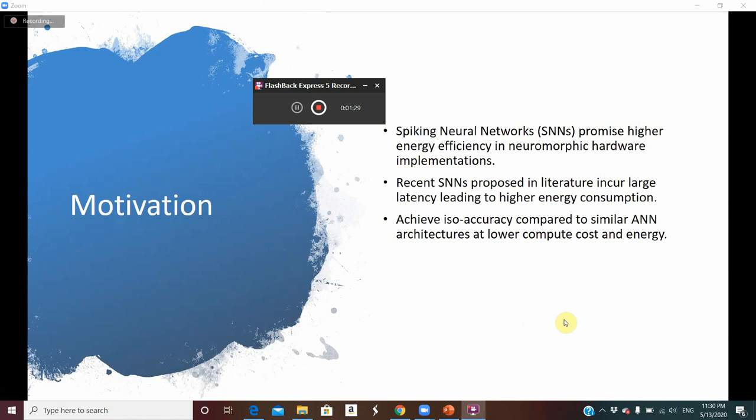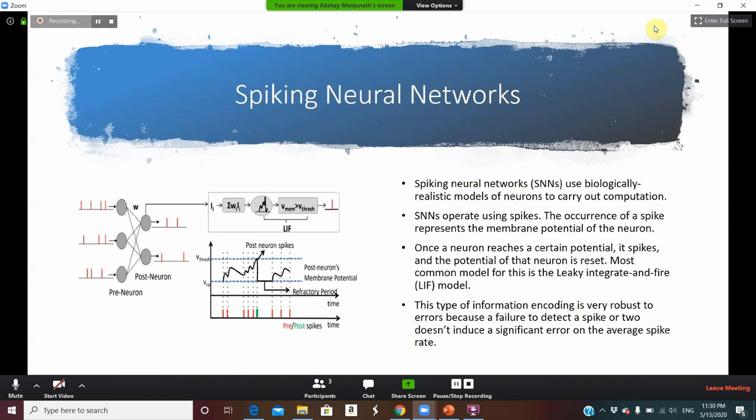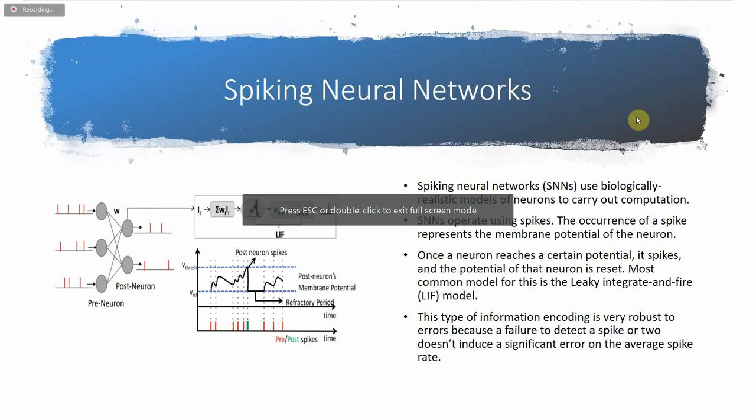Spiking neural networks mimic a human neuron and use biologically realistic models of neurons to carry out computation. SNNs operate using spikes where the occurrence of a spike represents the membrane potential of the neuron. Once a neuron reaches a certain potential called the threshold potential, it spikes and the potential of the neuron is reset. The most common model employed for this is the leaky integrate-and-fire model.